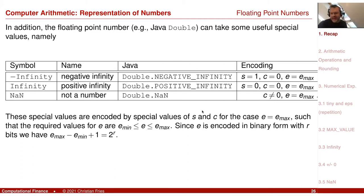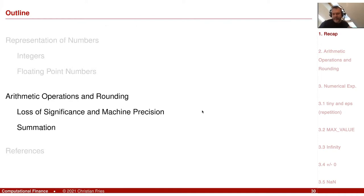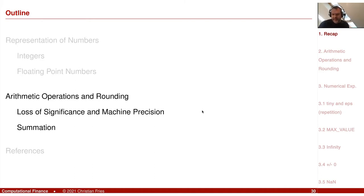So now the question is: what happens if we perform arithmetic operations on this set? Of course, we take two numbers from this set, we plug these two numbers into some mathematical formula, and then the result is not necessarily in this set. It could be that the mathematical result is in between numbers that are in this set. So since I want to have the result represented again as a floating point number, I need some rounding of the result.